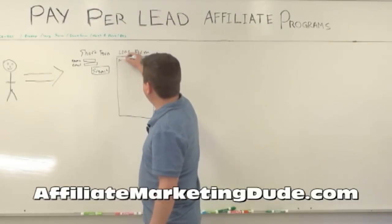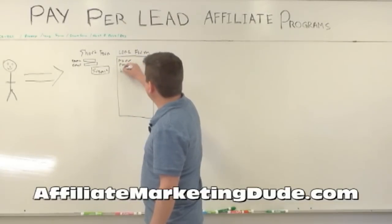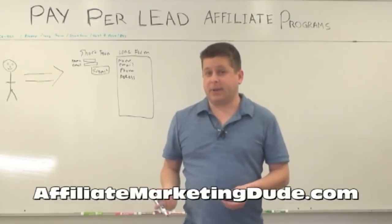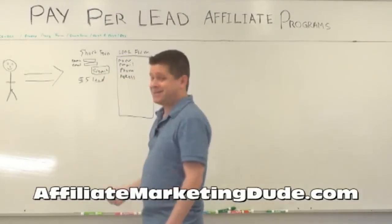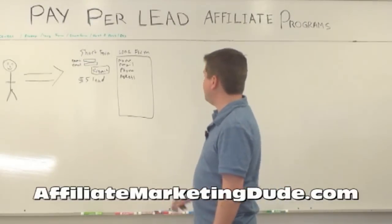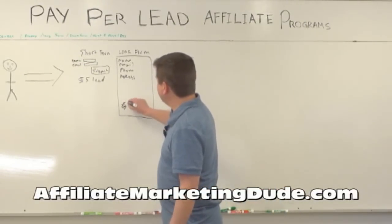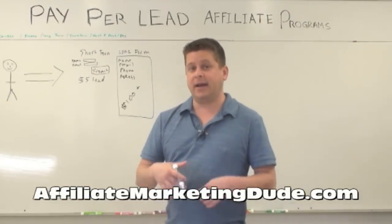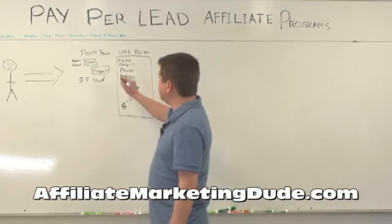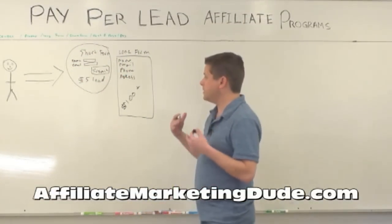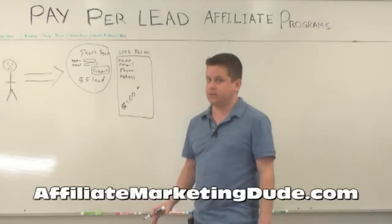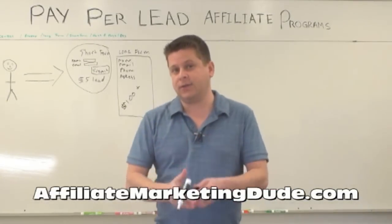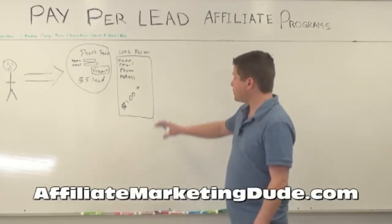A long form requires more info — name, email, phone, address, or even a full mortgage application. Short forms can pay as much as five dollars per lead, just like the Kohl's example. Long forms can pay up to a hundred dollars or more for something like a mortgage refinance application. You want to pair your offer with what fits the traffic you have — don't just chase higher payouts if it won't convert.